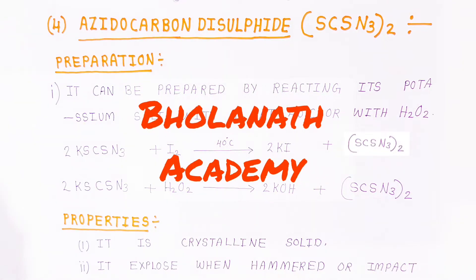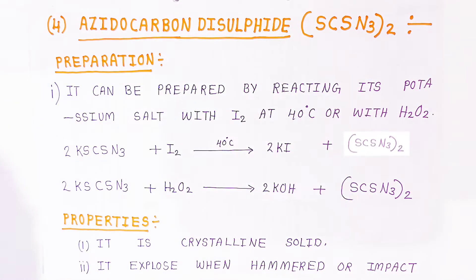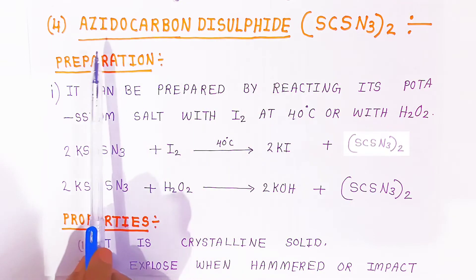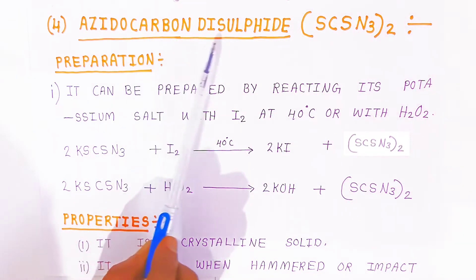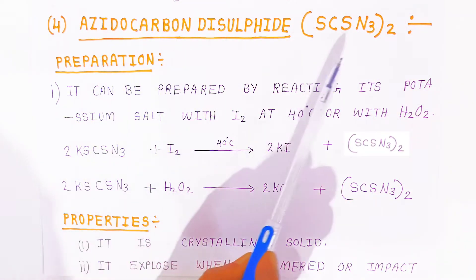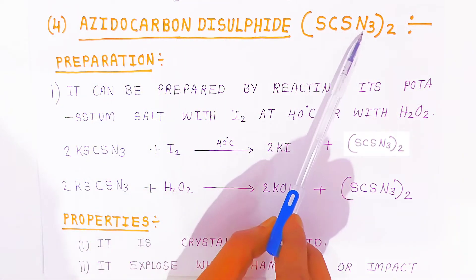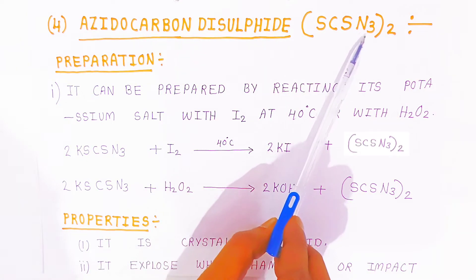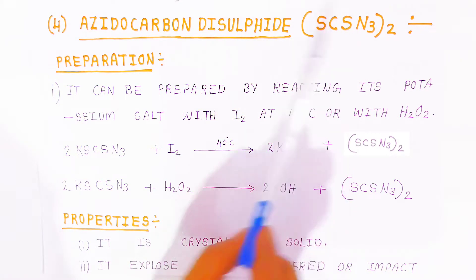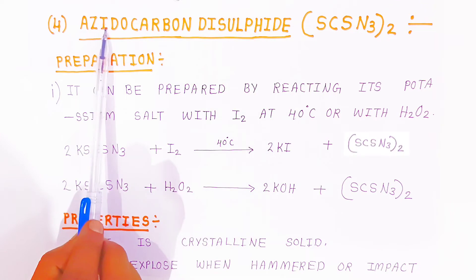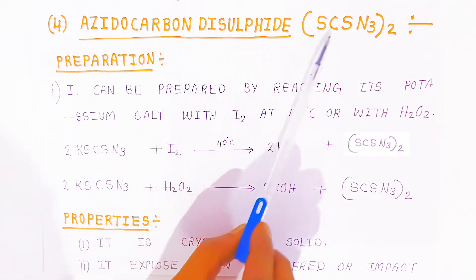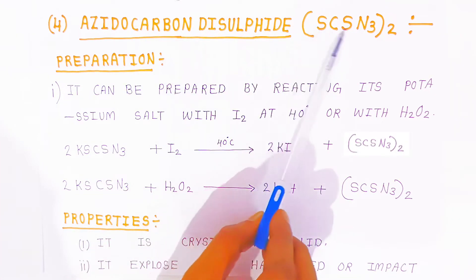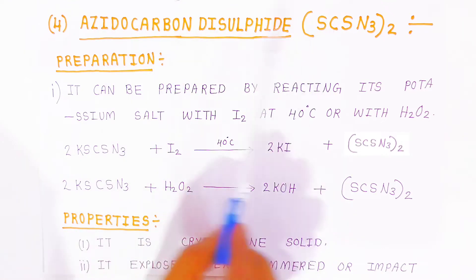Welcome to Bholanatha Academy. In this video we are going to see the fourth example, that is called azido carbon disulfide. It is called 'azido' because of the nitrogen — there is a three-nitrogen string, that is why it is called the azide group. So this compound is called azido carbon disulfide.